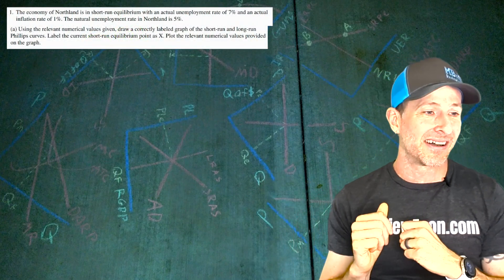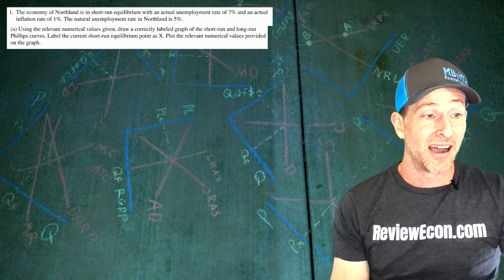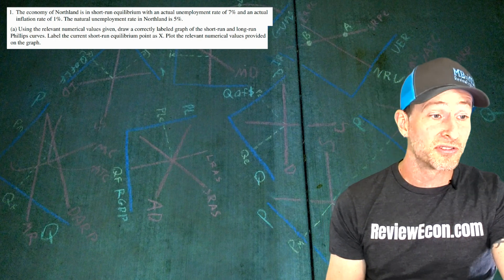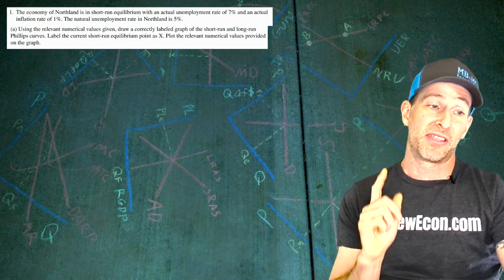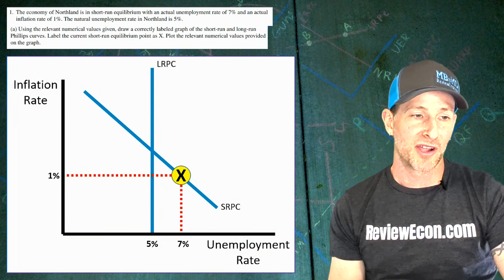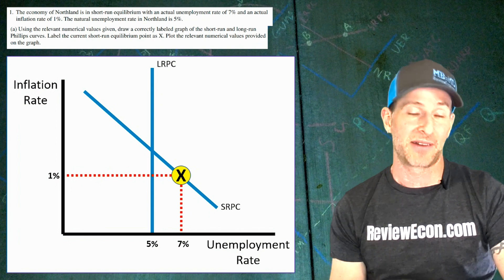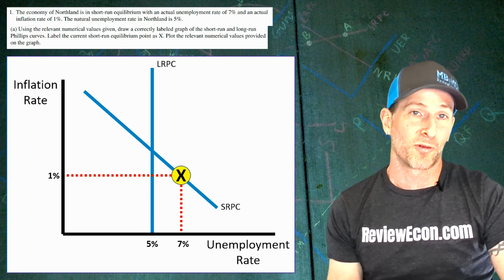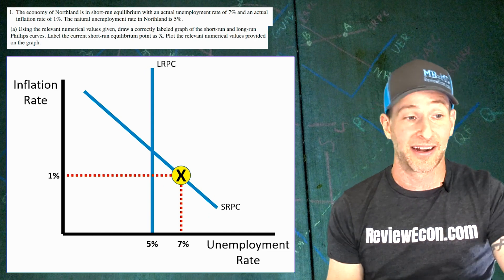The economy of Northland is in short-run equilibrium with an actual unemployment rate of 7% and an actual inflation rate of 1%, while the natural rate of unemployment is 5%. We draw a correctly labeled graph of the long-run and short-run Phillips curves with the current point labeled X. We have the 5% natural rate below the long-run Phillips curve, and at 7% unemployment point X is labeled at 1% inflation.